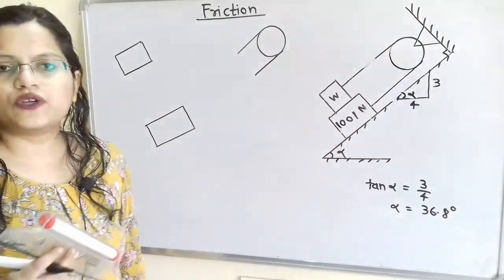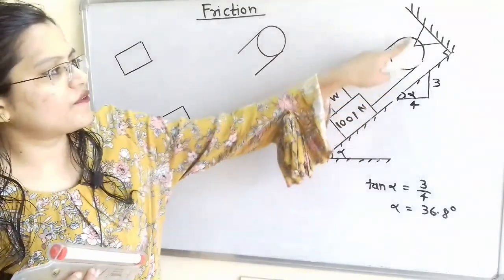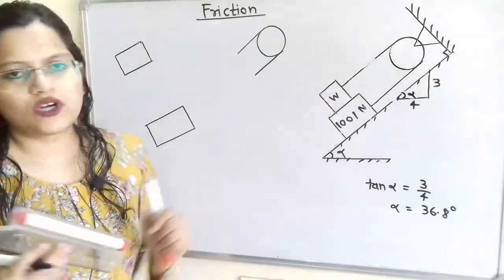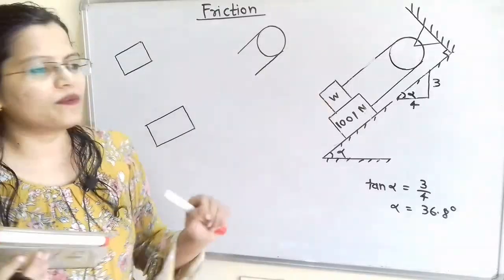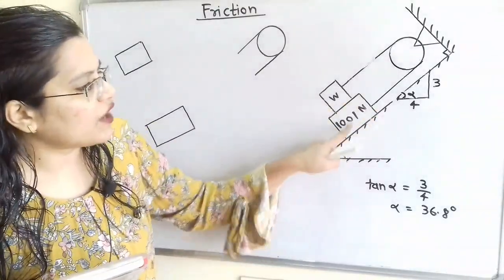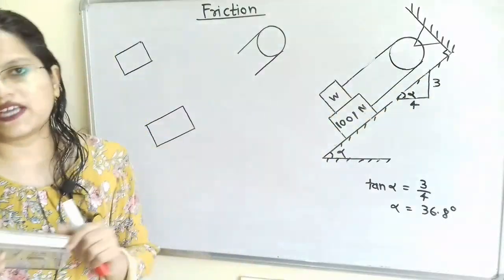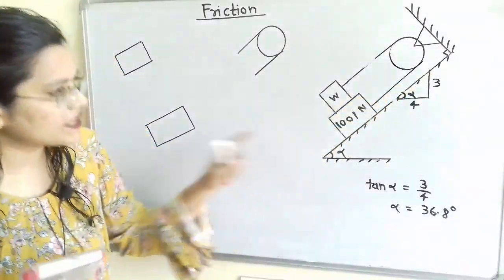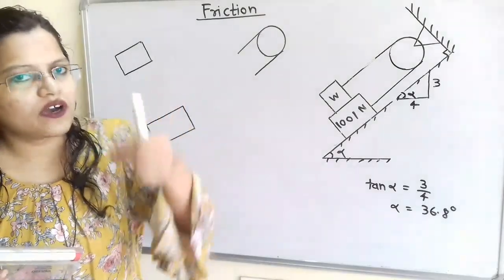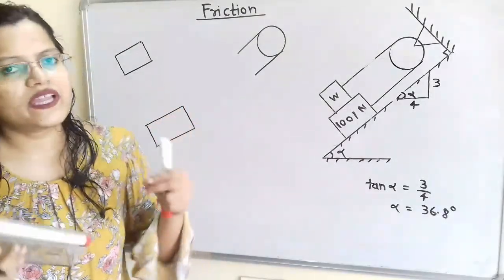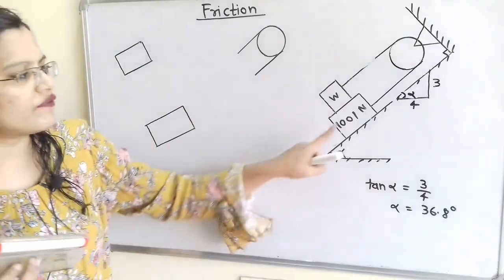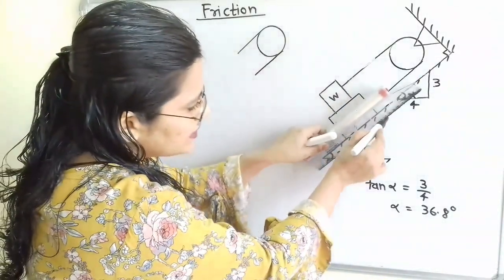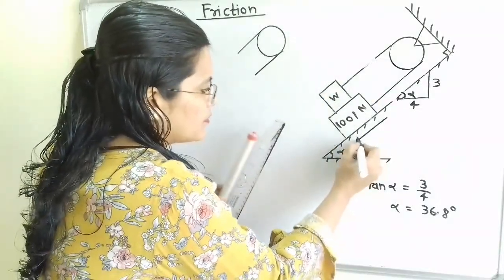The 1001 Newton block is connected with a rope passing through a disk to the other block with load W. We need to find load W to prevent the 1001 Newton block from moving in the downward direction. The block is on the verge of moving downward, so the motion is parallel to the inclined surface in the downward direction.